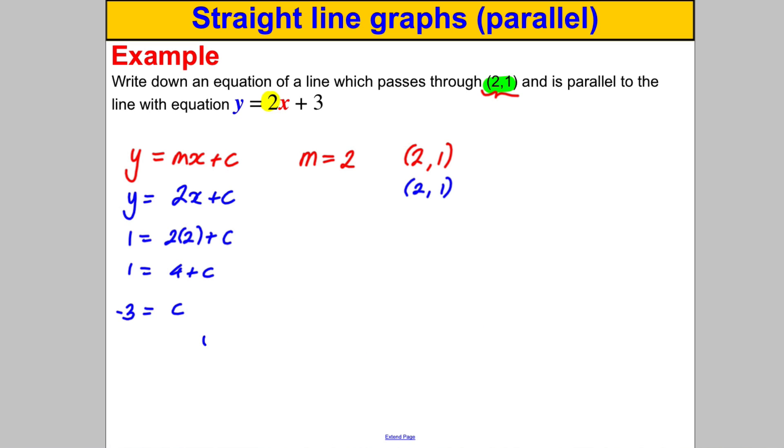Therefore we can state the equation Y is going to equal, well we've got our C, we already always had our M because it's the same gradient as the line that was given to us, so Y is equal to 2x take away 3. Just before you go ahead, double check it's certainly parallel to this line because it's got a 2 there.